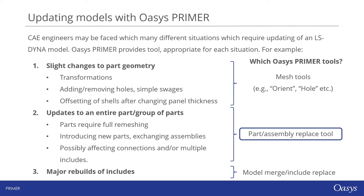The second category — and the focus of this webinar — concerns updates to an entire part or group of parts in the model. These changes might include replacing a part that's been fully remeshed using another piece of software, introducing new parts or exchanging assemblies. It's likely in this category that changes would affect connections or multiple includes at the same time, and this is where the part replace or assembly replace tool is most effective.